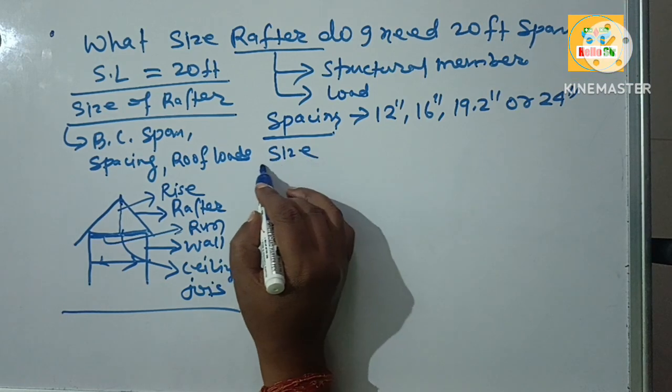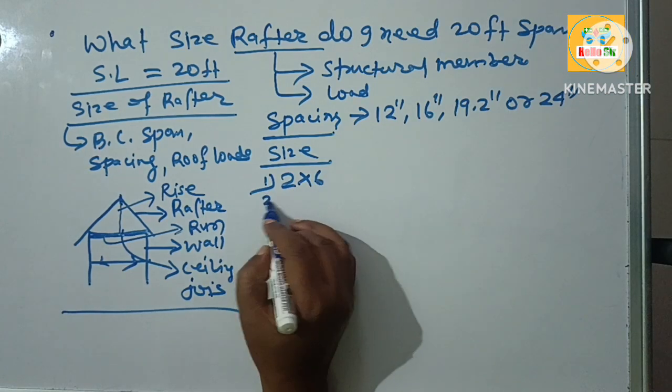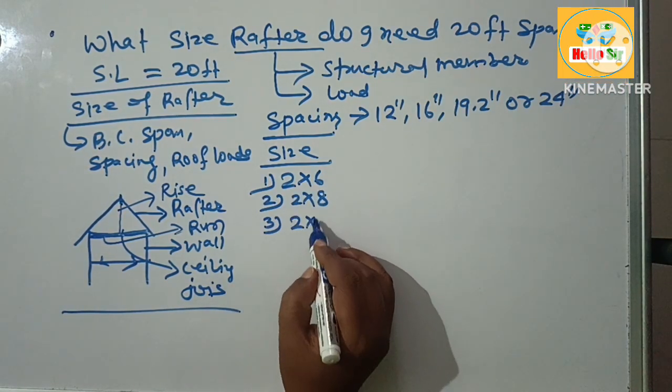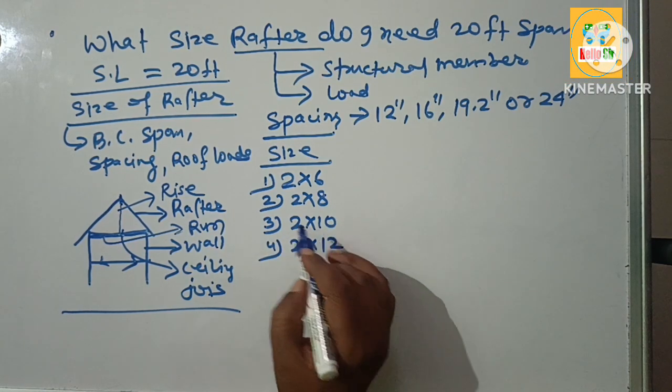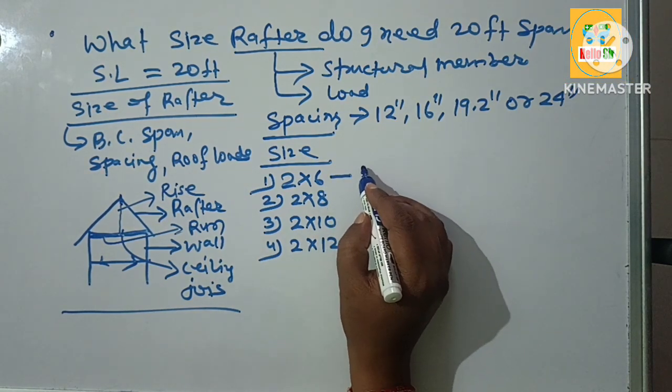The common size of roof rafter includes 2 by 6 inches, 2 by 8 rafter, 2 by 10 rafter and 2 by 12 rafter. A 2 by 6 rafter may span from 10 to 15 feet.